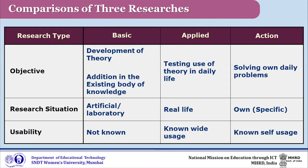Objective-wise the three types differ: in pure researches the objective is gaining knowledge for knowledge's sake; in applied researches the utility is tested in life; and in action research the research is conducted to solve the practitioner's own problem. From the usability point of view, these three types also differ. In action research there is immediate utility, but it is limited to one person, one group, or a specific group.